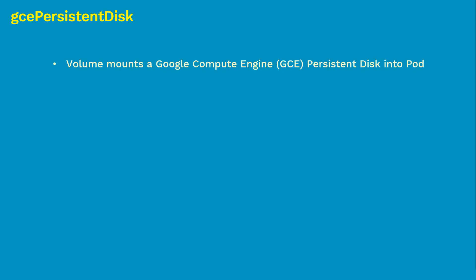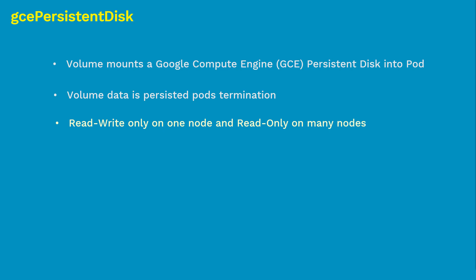GCE persistent disk is a persistent disk on Google Compute Engine. The GCE persistent disk volume type mounts a persistent disk into your pod. Unlike emptyDir, the contents inside the GCE persistent disk are preserved even after the pod is removed or dies for any unknown reason. Like any other cloud storage disk, GCE persistent disk can be mounted as read-only by multiple pods simultaneously. This means you can pre-populate a GCE persistent disk with your dataset and serve it in parallel to as many pods as you need. However, GCE persistent disk can only be mounted by a single pod in read-write mode — simultaneous writers are not allowed.